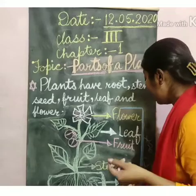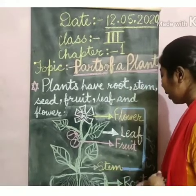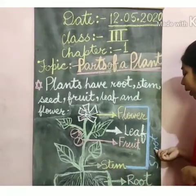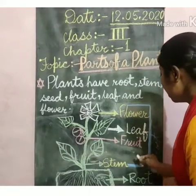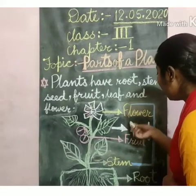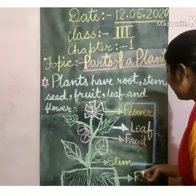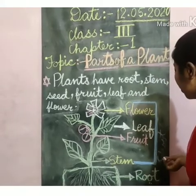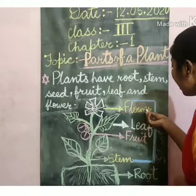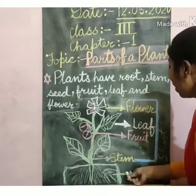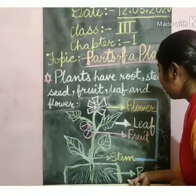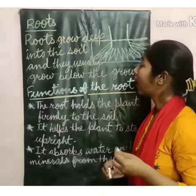A plant can be divided into two parts: root and shoot. The part above the ground is known as shoot — like stem, fruit, leaf, and flower — and the part below the ground is known as root.